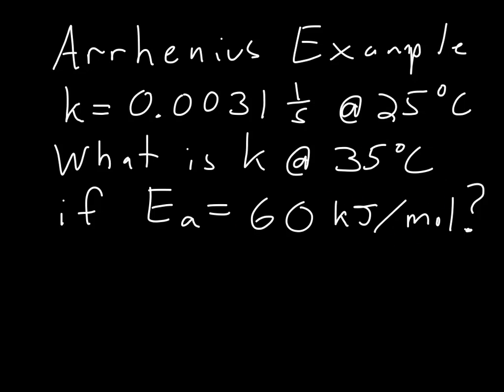Now remember that the Arrhenius equation has two parameters. It has the activation energy, which we know - 60 kilojoules per mole - but also this pre-exponential factor. And in this problem we're not given A.